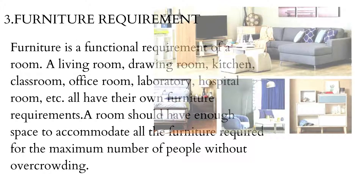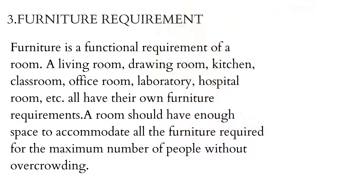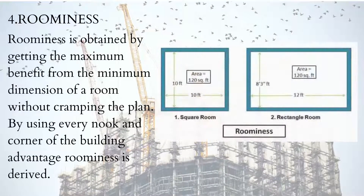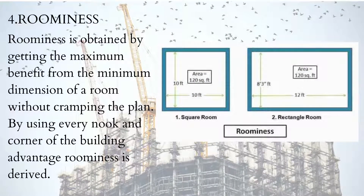Furniture Requirements: Furniture is a functional requirement of a room. A living room, drawing room, kitchen, classroom, office room, laboratory, hospital room, etc., all have their own furniture requirements. Roominess: Roominess is obtained by getting the maximum benefit from the minimum dimensions of a room without cramping the plan.